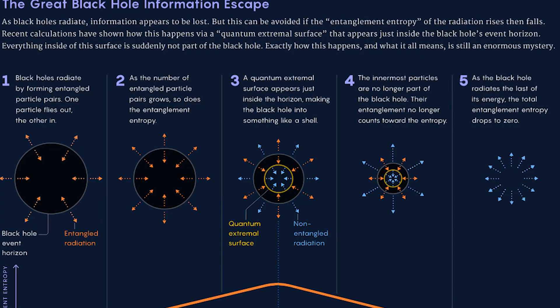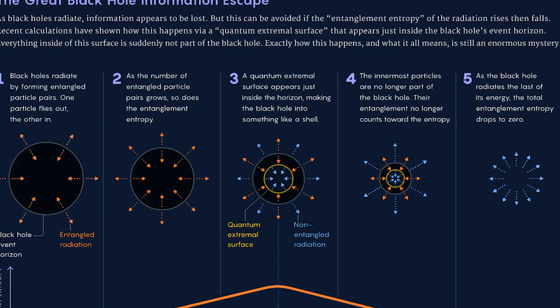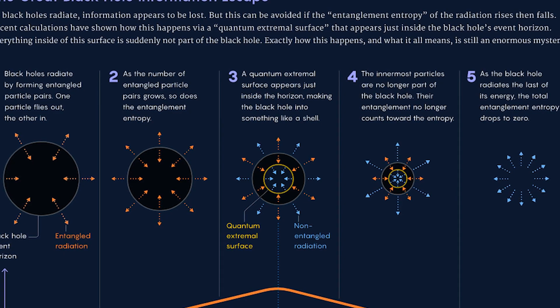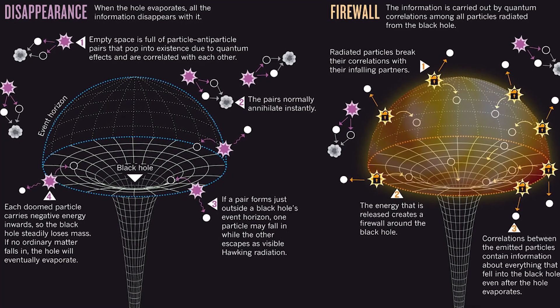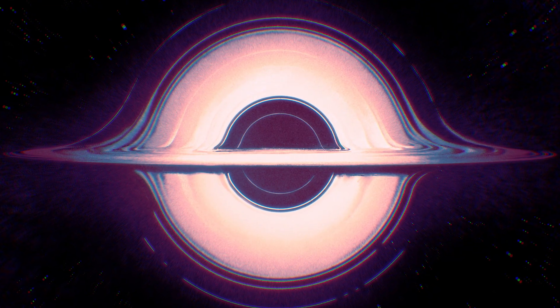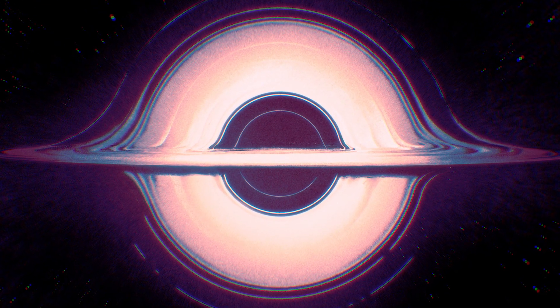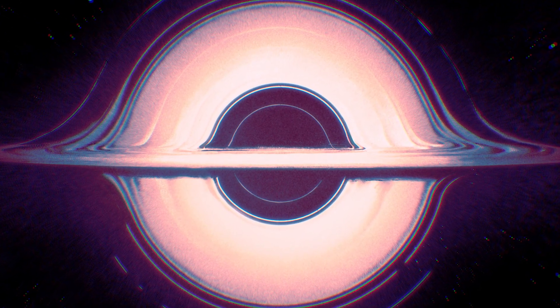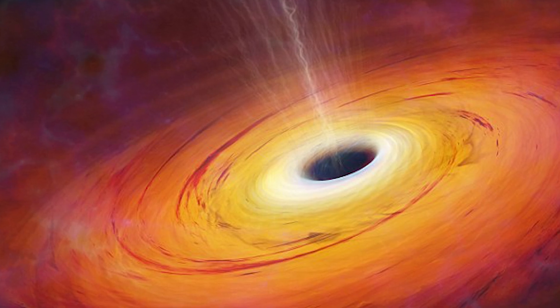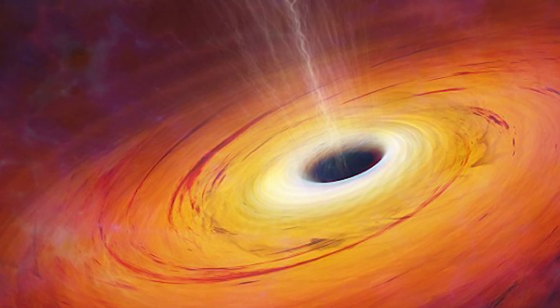The first is known as the black hole information paradox, and it states that any data entered into a black hole would be lost forever when the black hole died and faded away into nothing. However, since information is thought to be inviolate and cannot be destroyed, this problem would be easily resolved by quantum bounces. When a black hole transforms into a white hole, all of its data is instantly erased.